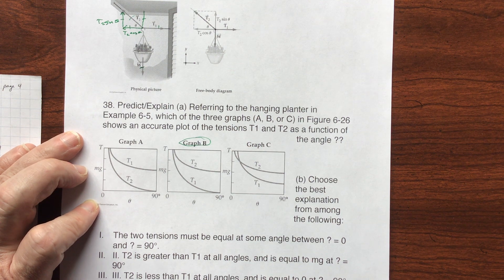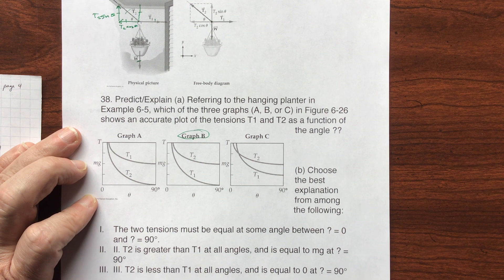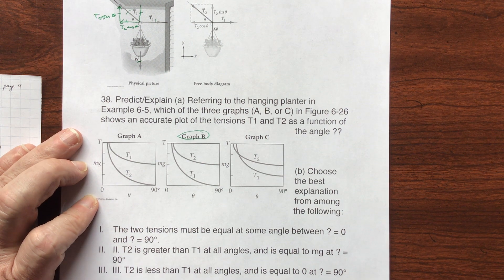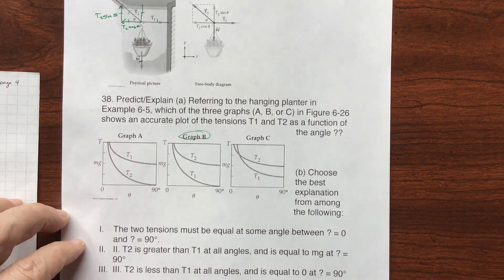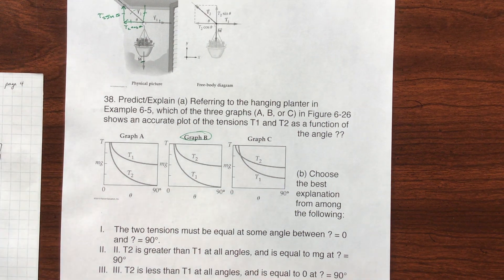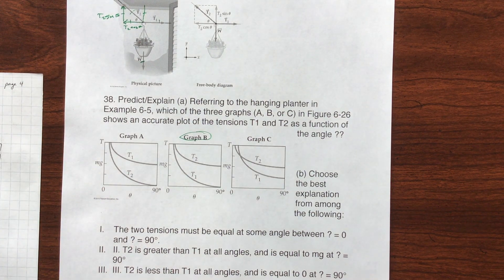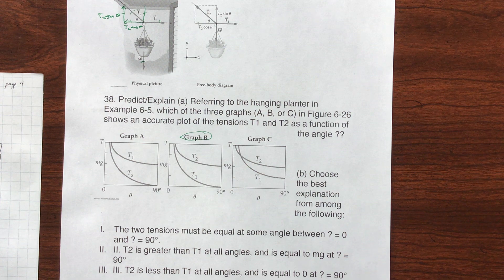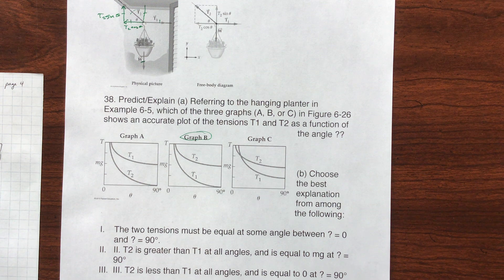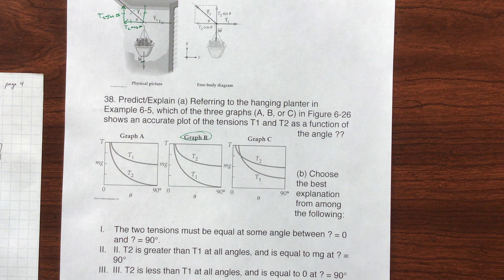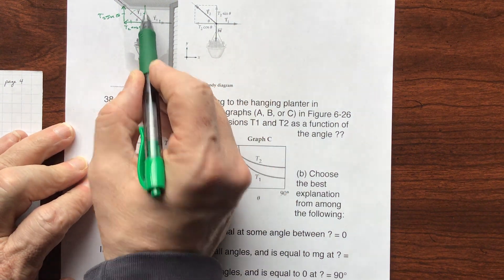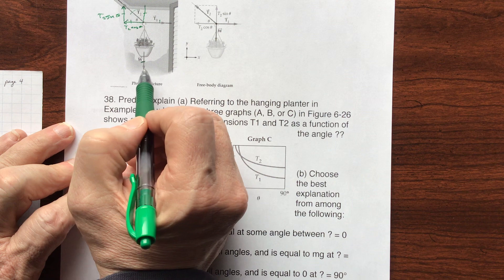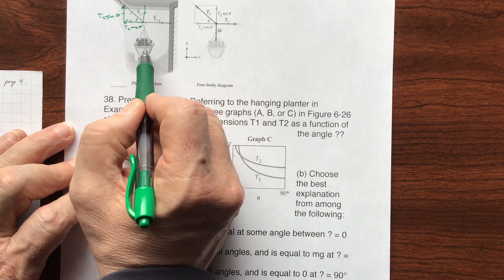Now, why? The two tensions must be equal at some angle. Oh, that's possible. What's 2 say? T2 is greater than T1 at all angles and is equal to MG at 90. Oh, I like that. At 90, it's equal to the MG. As soon as this is at 90, this is with this, and this goes with this.